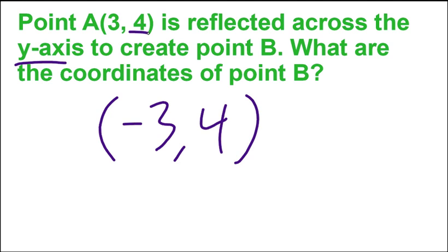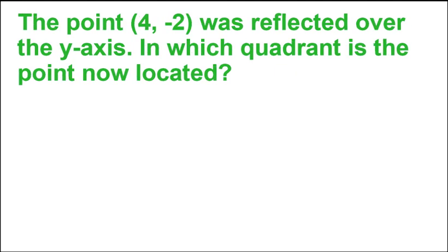So that's one type of problem that we have with reflections. All it is is taking a point, changing the signs on one of the numbers. The other type of problem combines that with the problems we did yesterday. It's asking for the quadrant. So we still have a reflection over the y-axis, so that means y stays the same, x changes signs.